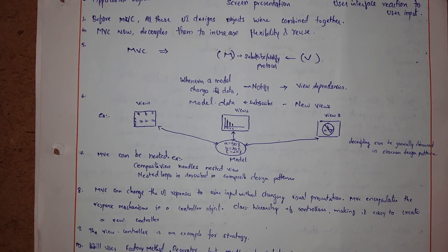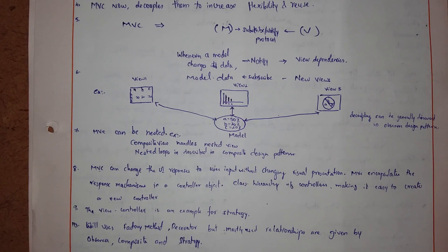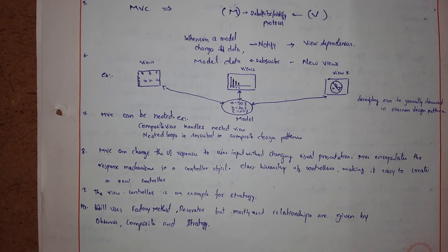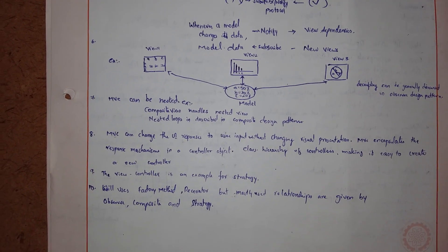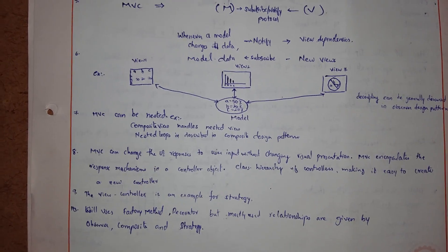When MVC model changes its data, it notifies the view dependency, and whenever a model is being requested by a view, it's known as a subscribe protocol. That's how it is.